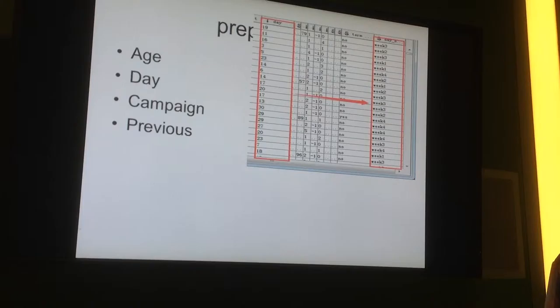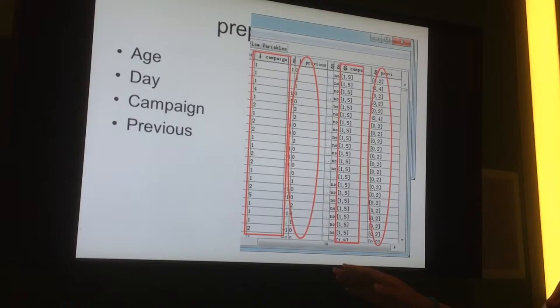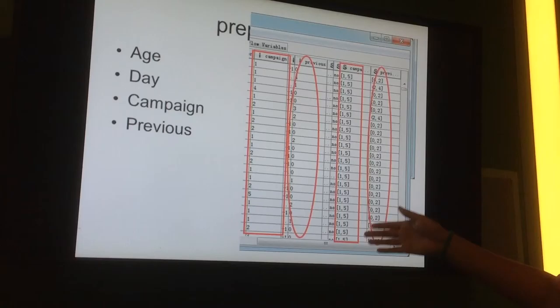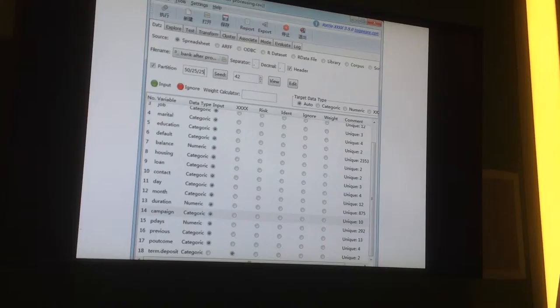And for the campaign and the previous attributes, because we can't change them into categorical values, so we bin them with the same width. It looks like that after preprocessing.